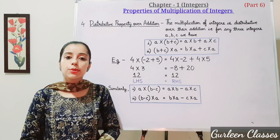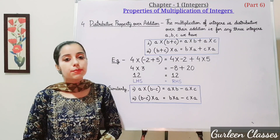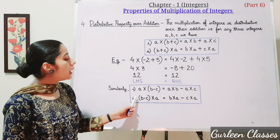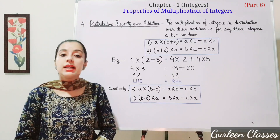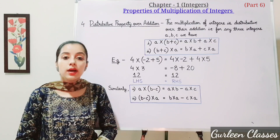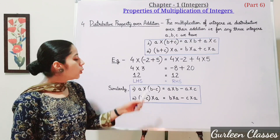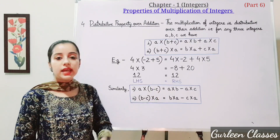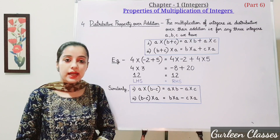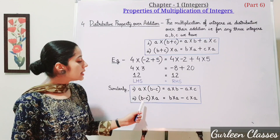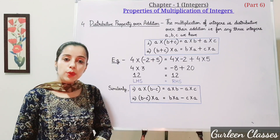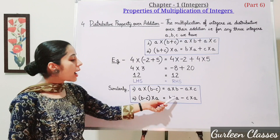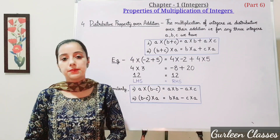Similarly, we have the distributive property over subtraction. Here a into (b minus c) is equal to a into b minus a into c. And (b minus c) into a is equal to b into a minus c into a.